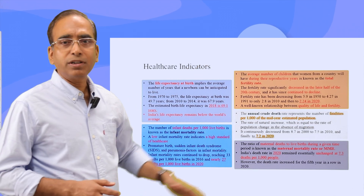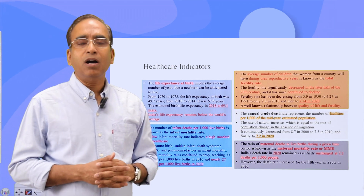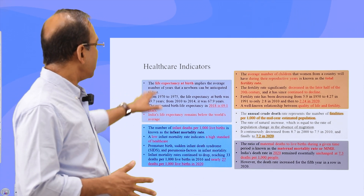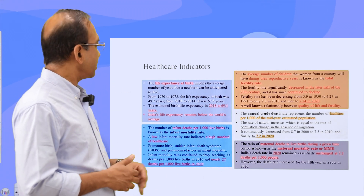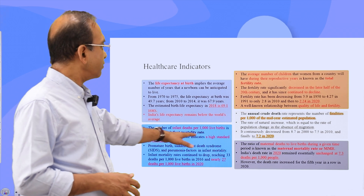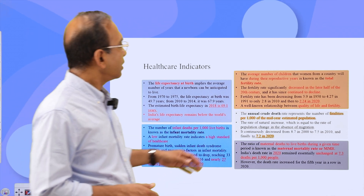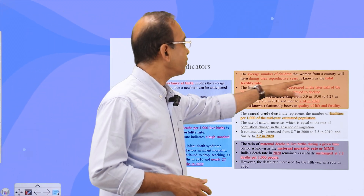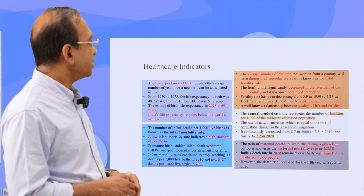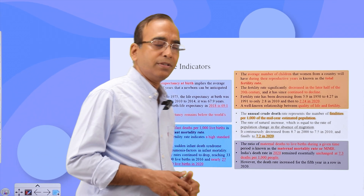Here we are talking about some of the major or most popular health indicators. One is life expectancy at birth, second is infant mortality rate, third is fertility rate, and then the crude death rate and maternal mortality.